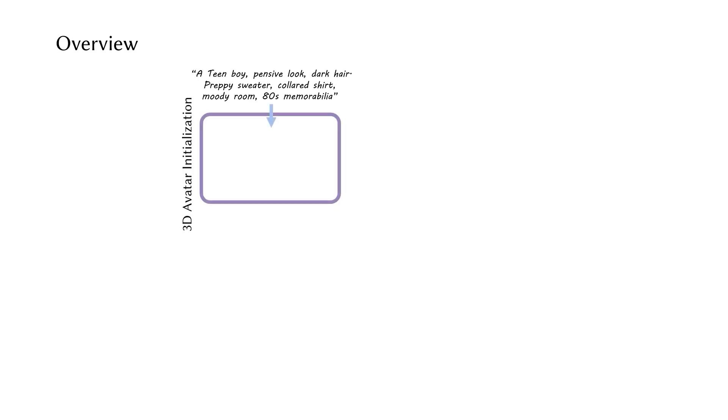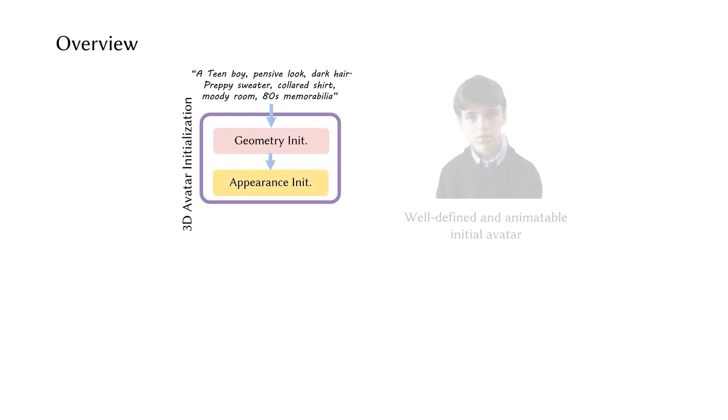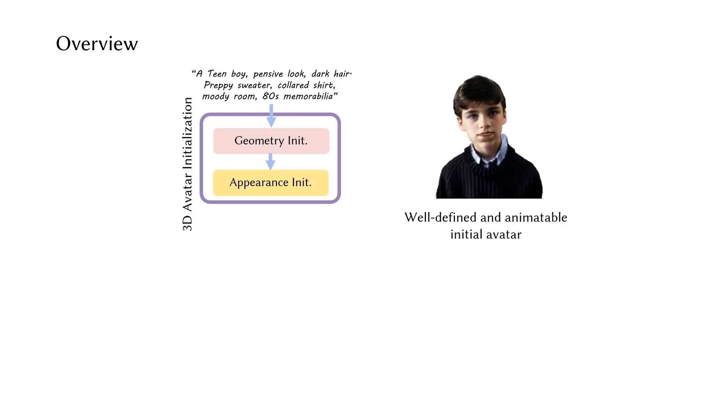Moving on to the methodology: we address appearance and geometry ambiguities by introducing an initialization stage. This stage performs geometry and appearance initialization to create an initial 3D avatar with robust appearance, geometry, and rigging relationships to the morphable model.